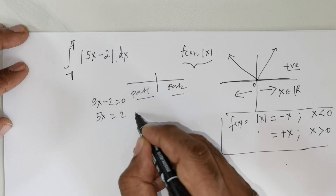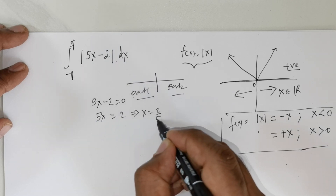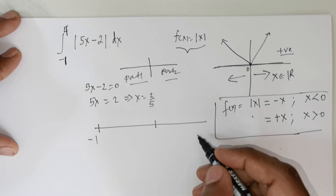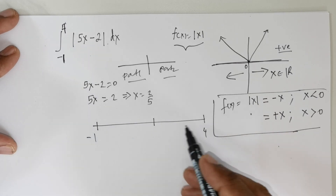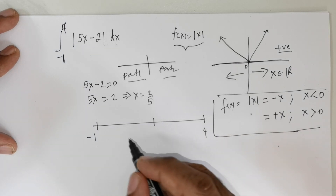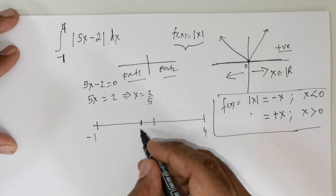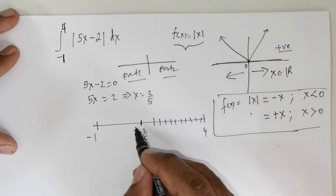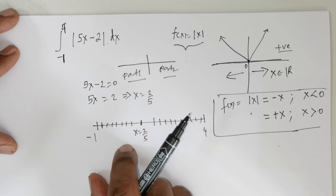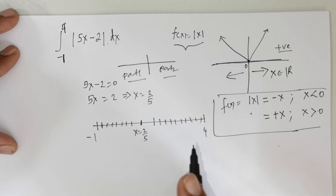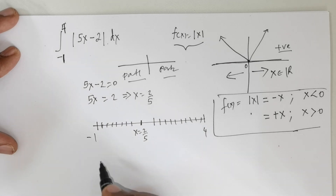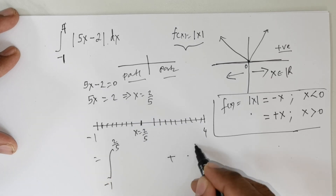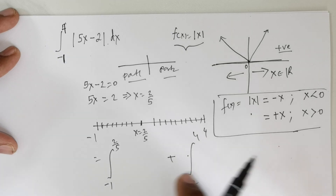Setting 5x minus 2 equal to 0 gives x = 2/5. So on the number line, the initial point is negative 1, the final point is 4, and the intersecting point is x = 2/5. This gives us two regions. The area must be divided into two parts: from negative 1 to 2/5, and from 2/5 to 4.